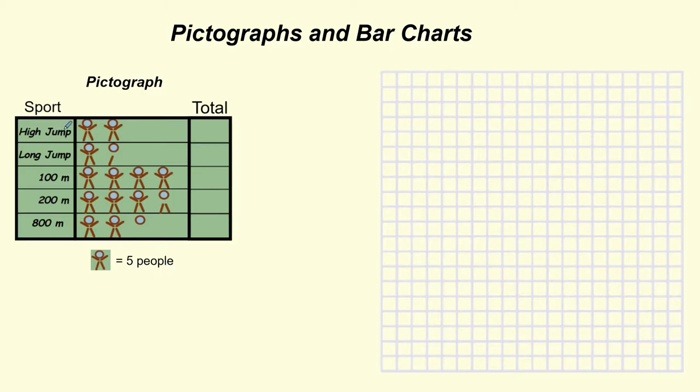So if we look at the first one, the high jump, you can see we've got one full stick person, two full stick people. That means ten in total. And that's all we're doing is we're going along.